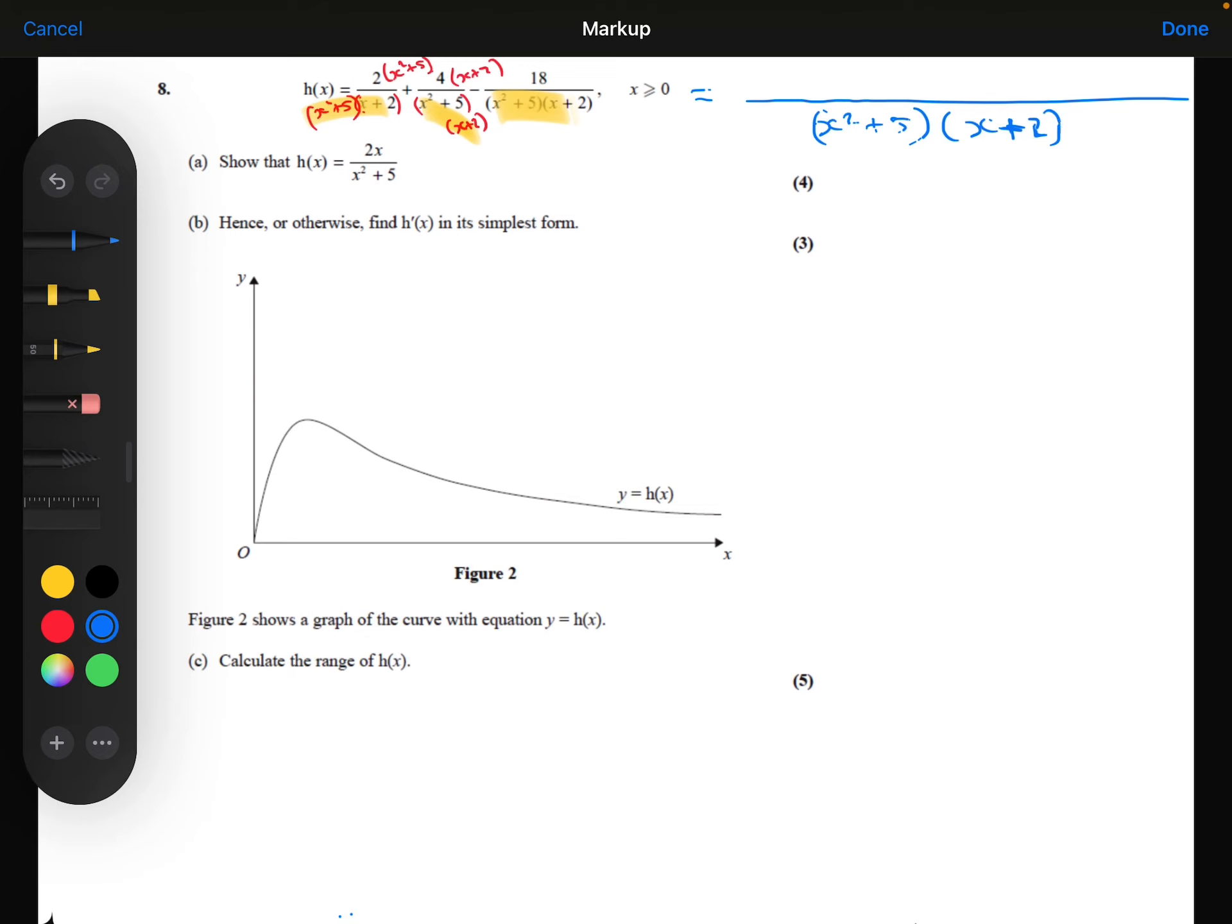And the numerator is 2 lots of the x squared plus 5 plus 4 lots of the x plus 2 minus the 18.